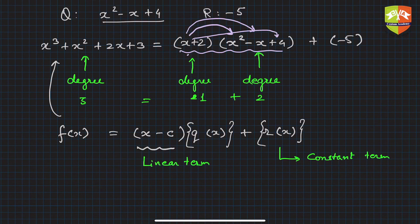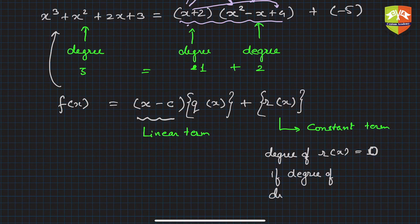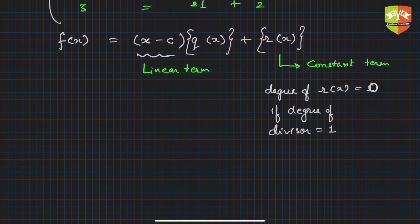So the degree of r(x) will always be 0 when the degree of the divisor is 1. The remainder will always have a degree less than the divisor. Please remember this — it is a very fundamental behavior of polynomials.